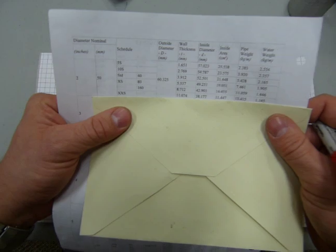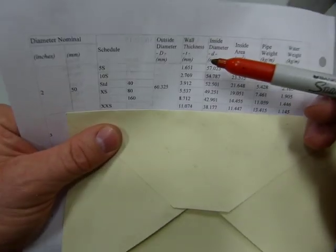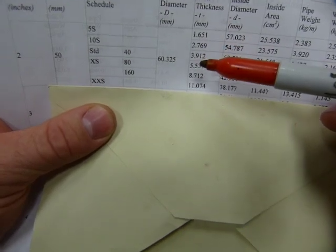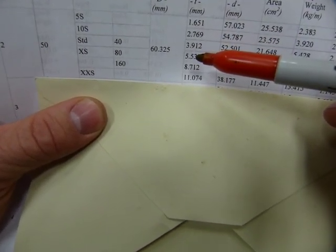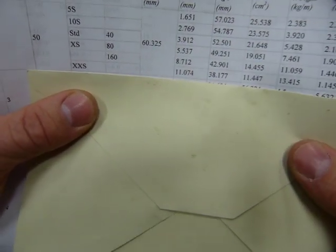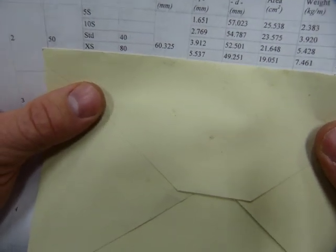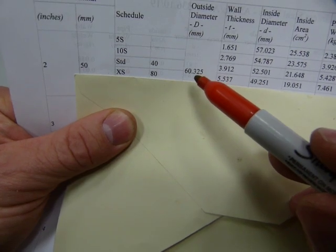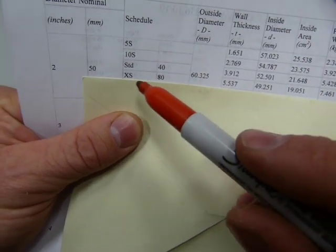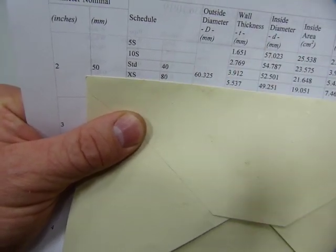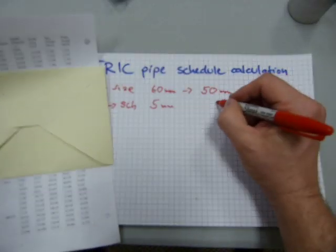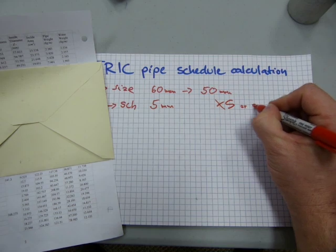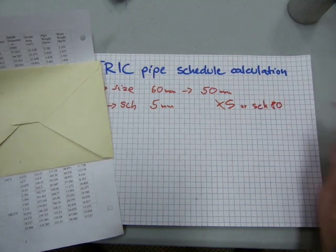The wall thickness was 5 millimeters. So let's look at the wall thicknesses. Let me see 1.6, 3.9, 5.5. I think that's our line of information there. 5.5. The wall thickness was 5.5. Outside was 60. So it is a schedule 80 pipe or extra strong. So we have extra strong or schedule 80 pipe.